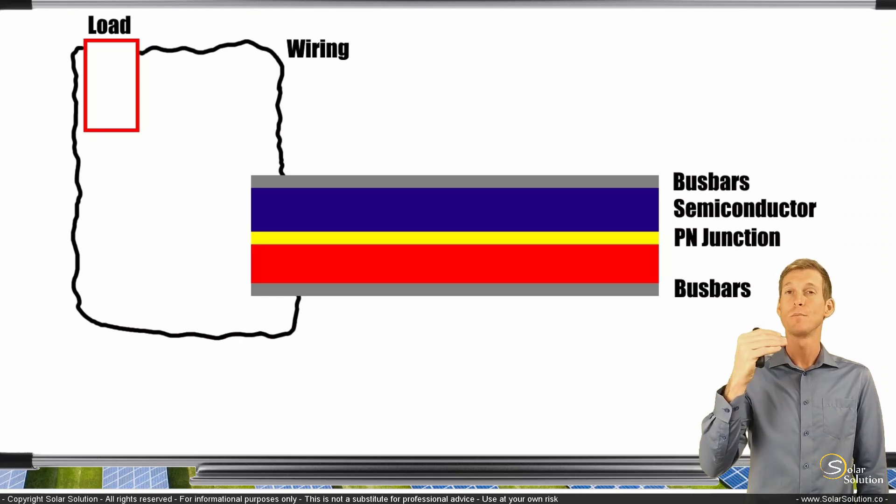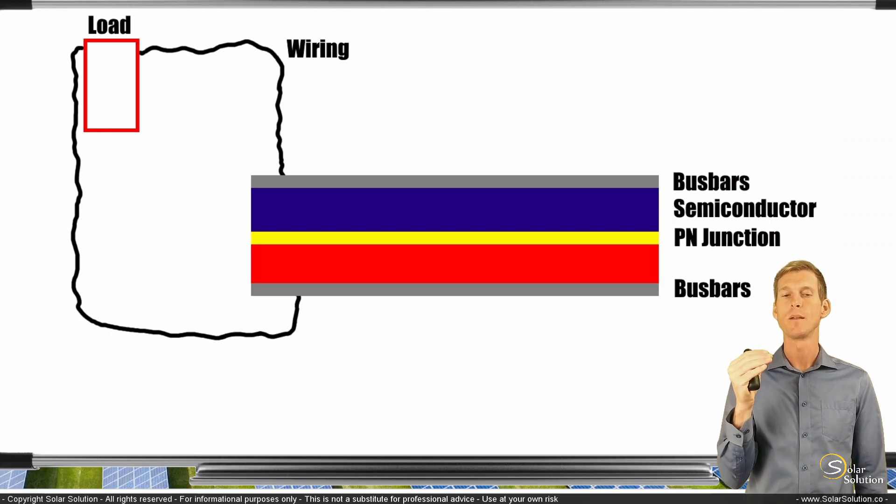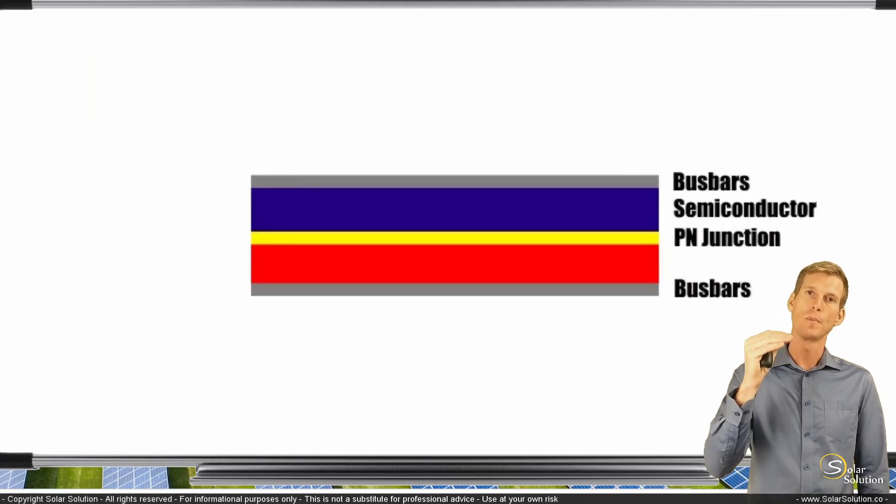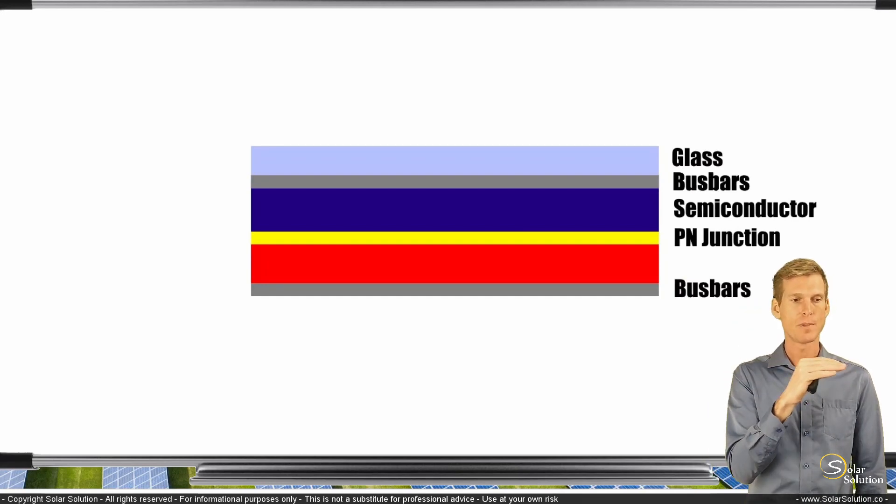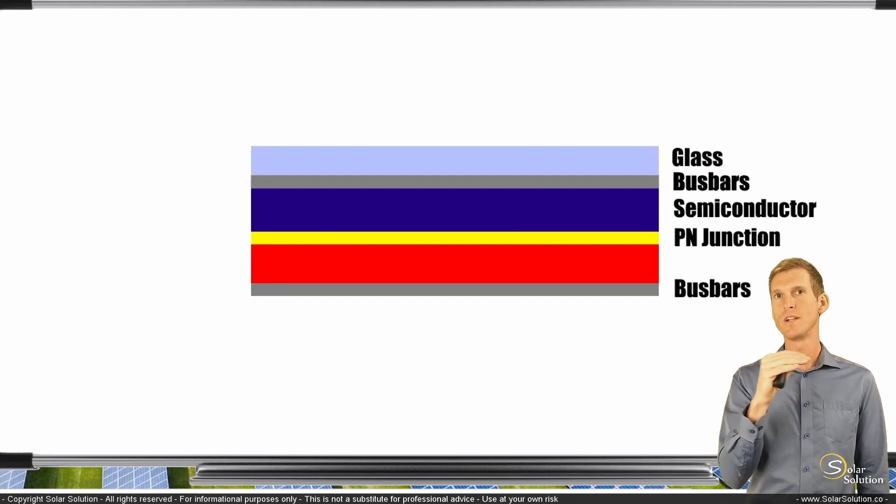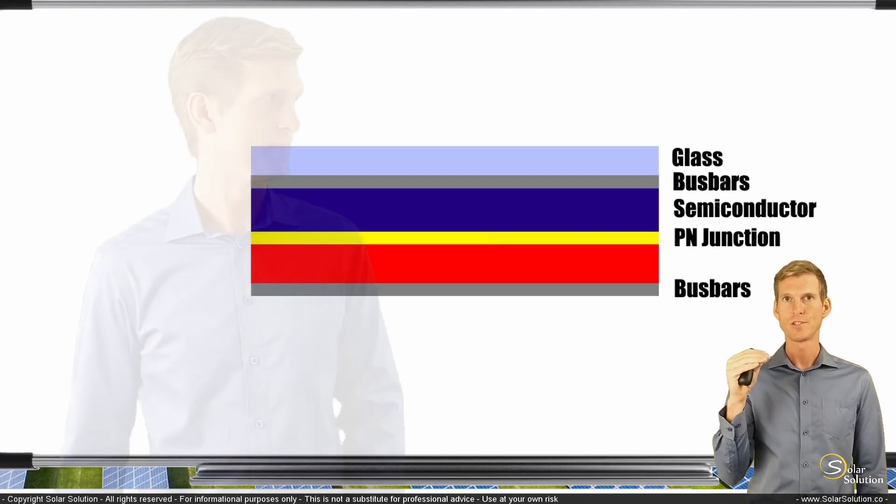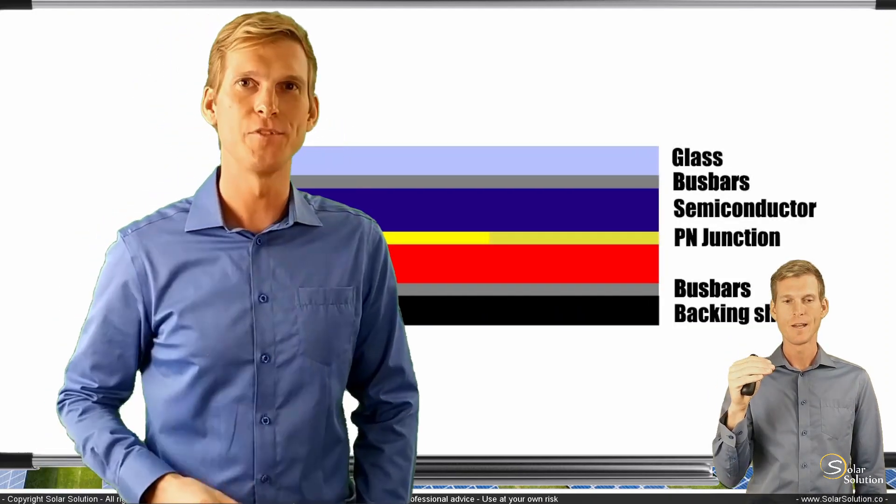And we want to place this inside of a module and protect it from the elements. So normally what we do is we place glass on one side, on the front side of the photovoltaic cell, and we place some kind of opaque material on the rear side, which we call the backing sheet. All right, let him shut up for a second.